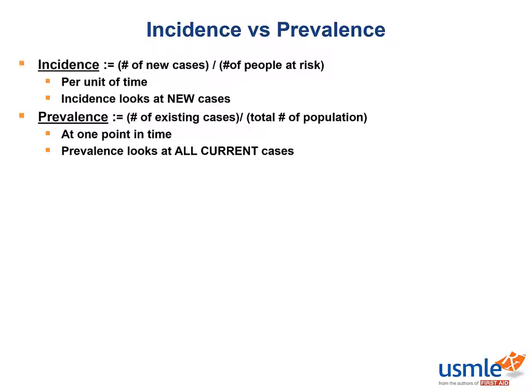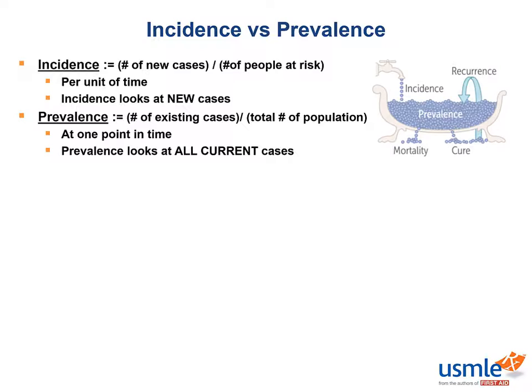Prevalence describes a single point in time. To use an image from your book to better understand this concept, imagine a tub with a faucet leaking droplets of water into the tub. The incidence of disease would be represented by each droplet that falls into the tub, as these are the new cases that are being introduced into the population at risk. The prevalence would be represented by the water already collected in the tub, as these are the existing cases.